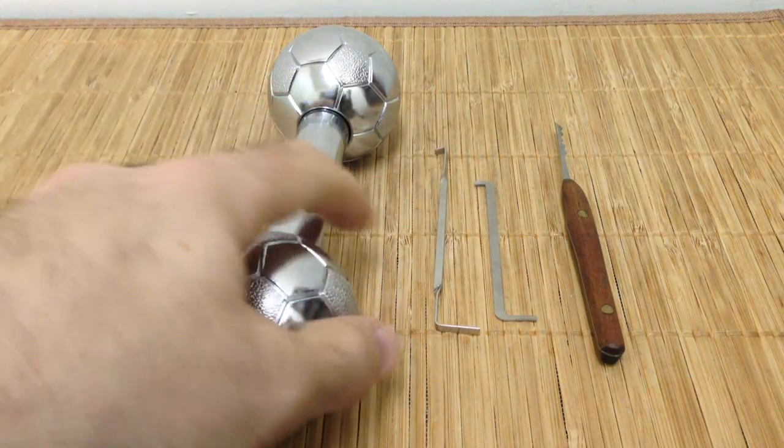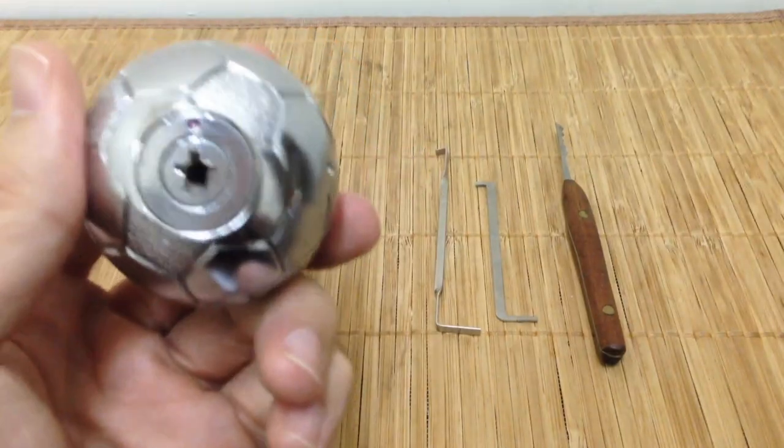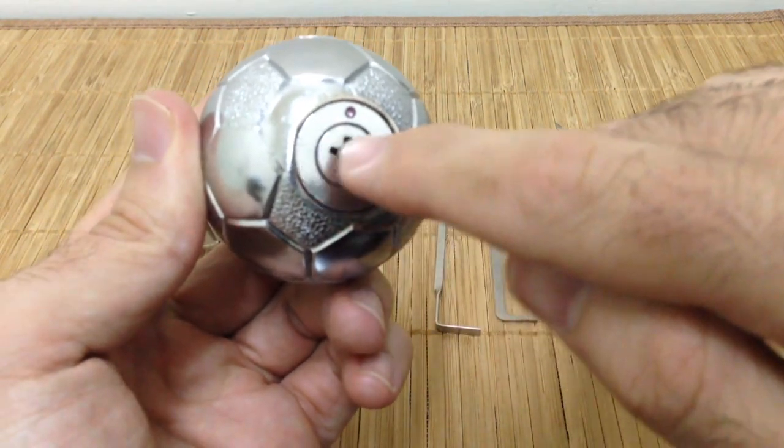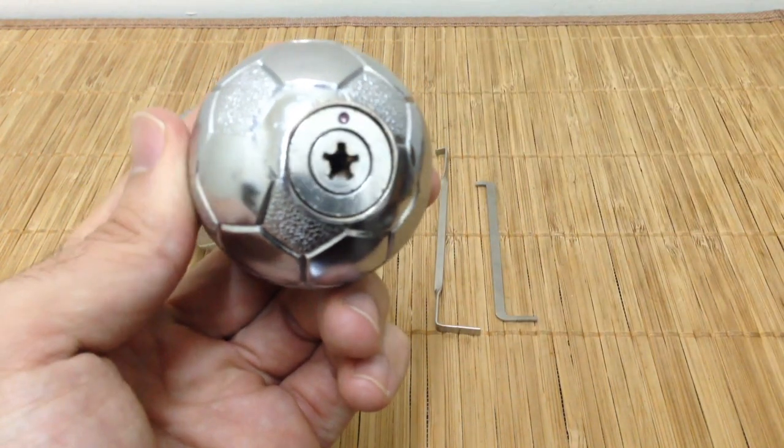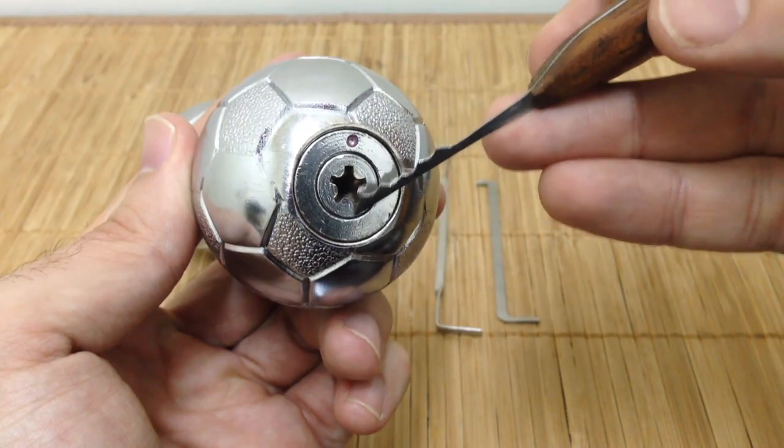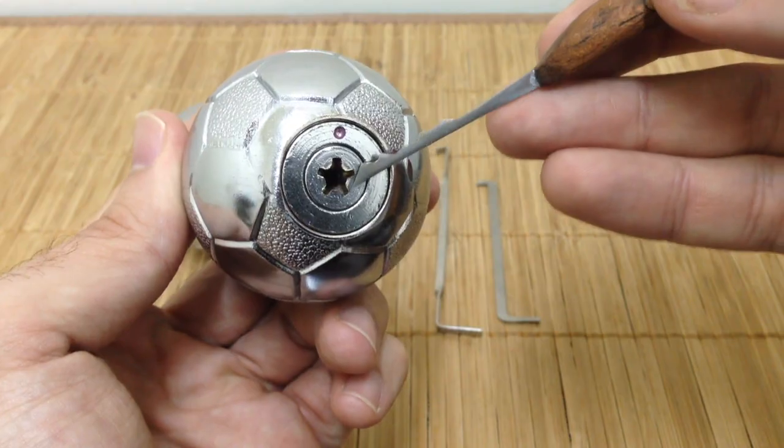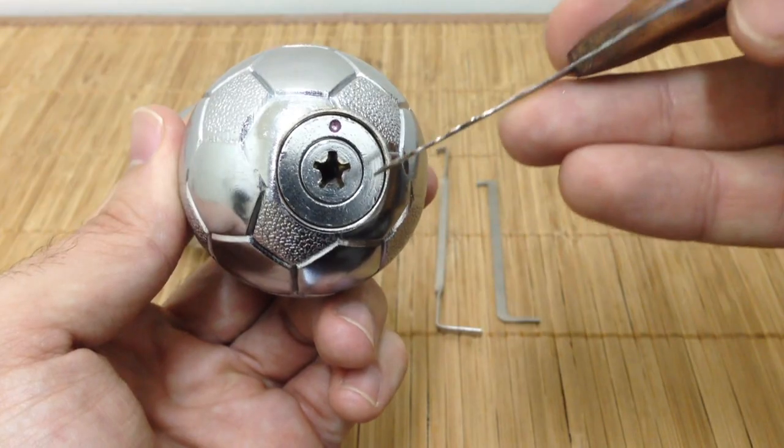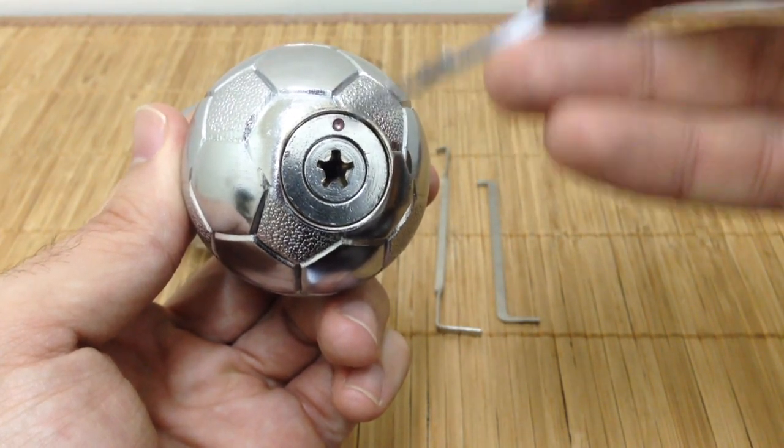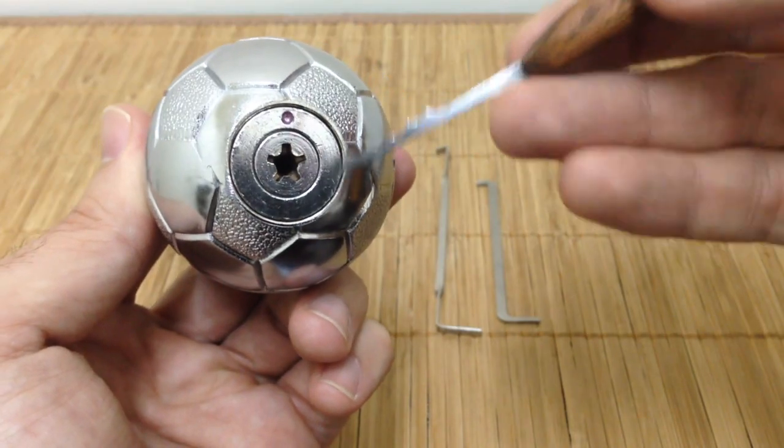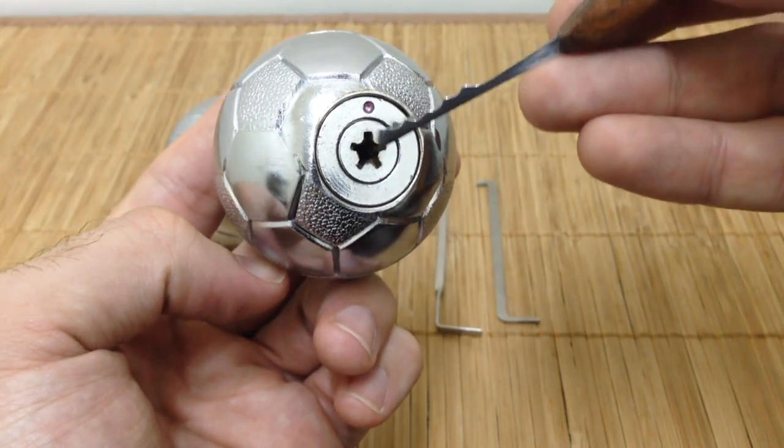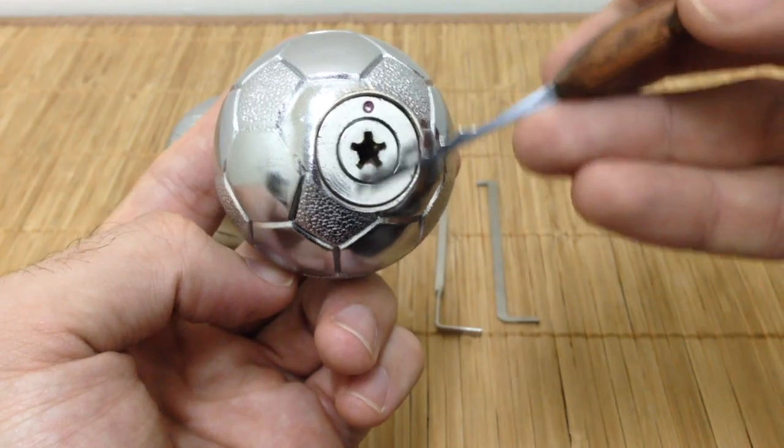To pick this lock, it can be a little bit frustrating at times because you're going to have to do a lot of checking. You're going to be going around this several times to see what's binding, what you set. And if you overset something, it takes you time to realize it because you'll just keep going around. So although it doesn't have security pins, it can be a pain to pick this at times, just because of the number of pins and how many times you have to go around.